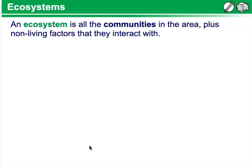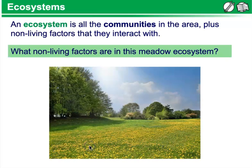Ecosystems. An ecosystem is all the communities in the area, plus any non-living factors that they interact with. So what are some non-living factors that you can see in this image? Some of them may include minerals in the soil, water, sunlight, oxygen, and even carbon dioxide in the atmosphere.